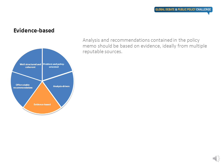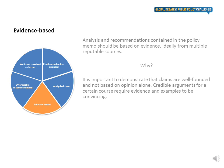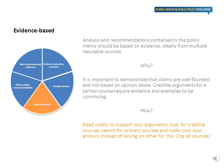Credible evidence makes a good policy memo. The analysis and recommendations contained in your policy memo should be based on evidence, ideally from multiple reputable sources. It is important to demonstrate that claims are well-founded and not based on opinion alone. Credible arguments for a certain course require evidence and examples to be convincing. Read widely to support your arguments and look for credible sources. Search for primary sources and make your own analysis instead of relying on others. It is important that you cite all sources used.